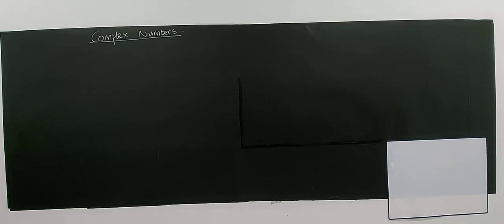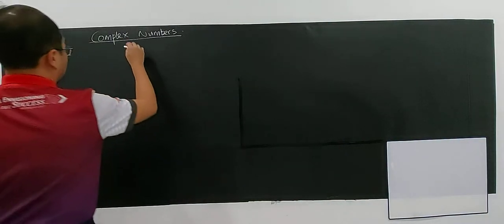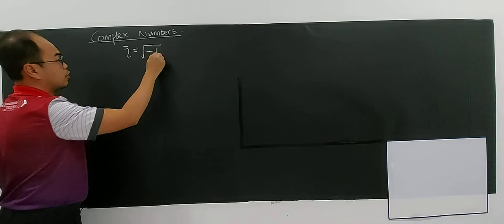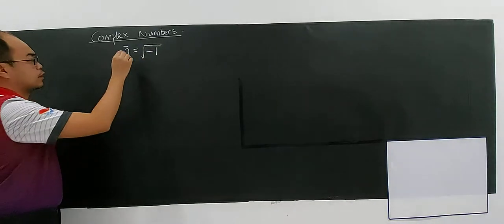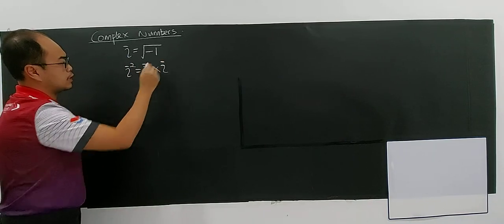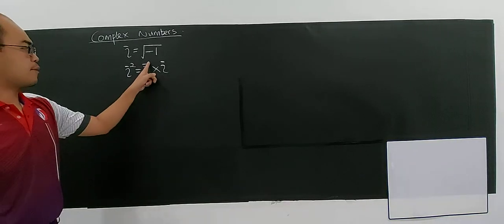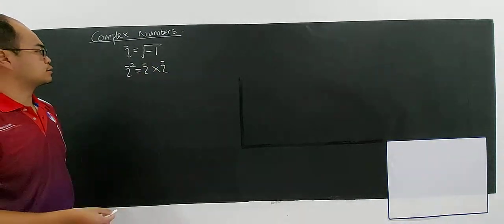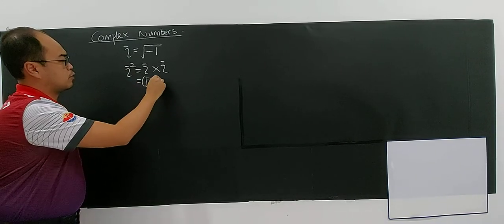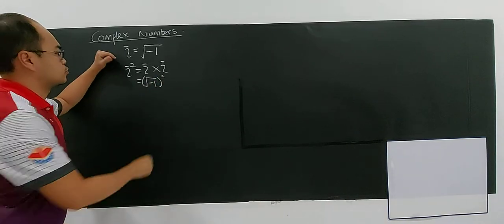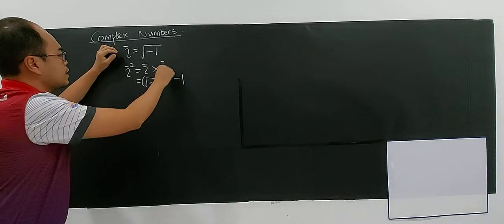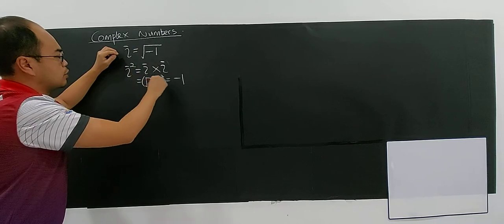In this video we're going to talk about the imaginary number i. i is defined by the square root of negative one. So i to the power of two is the same as i multiplied by i — just like index rules, i power one times i power one adds the indices to give two. So it will be the same as square root of negative one to the power of two.